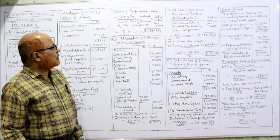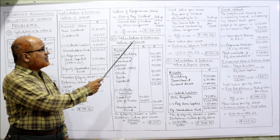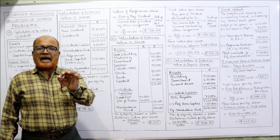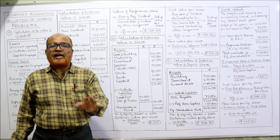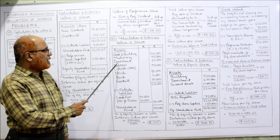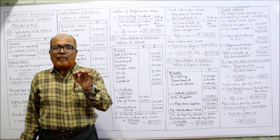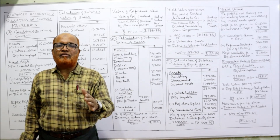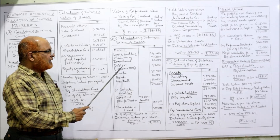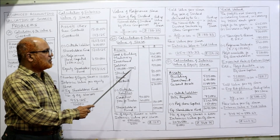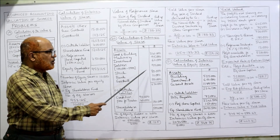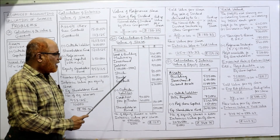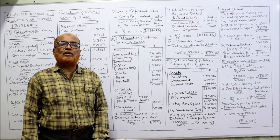Calculating intrinsic value: land and building at present value ₹2,40,000, machinery ₹95,000. For investments, we take market value ₹60,000, not the balance sheet value. Debtors: ₹1 lakh minus ₹5,000 bad debts = ₹95,000. Stock and bank balance taken at balance sheet values. Goodwill added at ₹50,000. Total assets = ₹6,30,000.